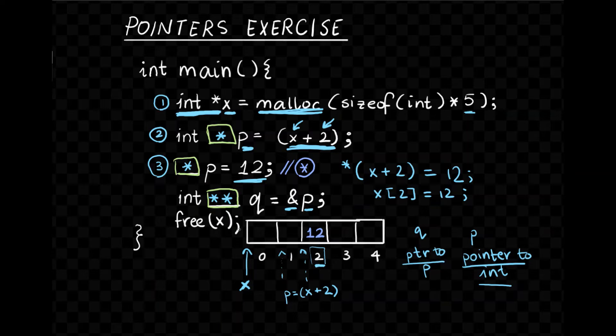So somewhere at the end I should actually write free x. Now I cannot write free p because p points to a position in this array that is not a pointer returned by malloc. You can only free something that was returned by malloc. So malloc in fact returns a pointer here, assigns it to x, and so we can free x. But p was never returned by malloc. So that ends our little pointers exercise.